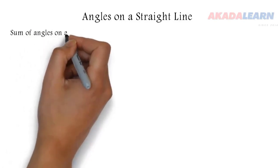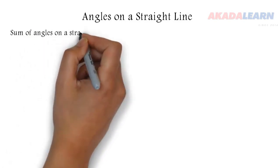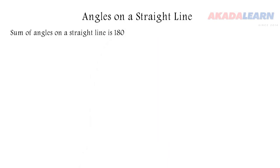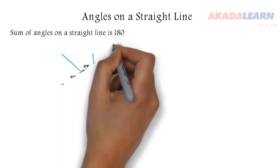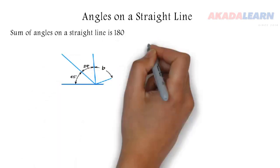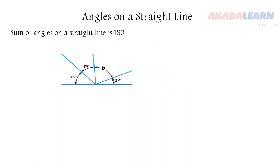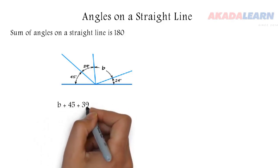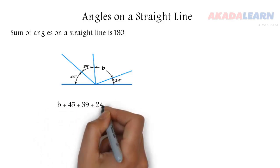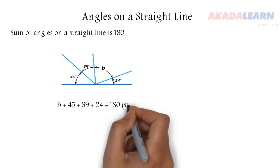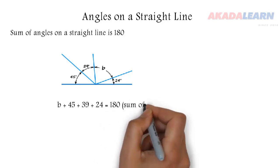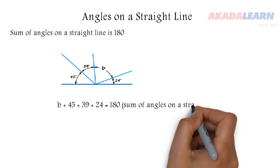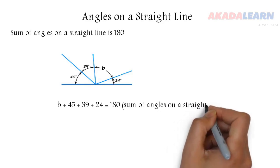The sum of angles on a straight line is 180 degrees. We have a straight line there with four angles. We want to find the value of angle B. So we add up the four angles together to get 180. Because the sum of angles on a straight line is 180 degrees.